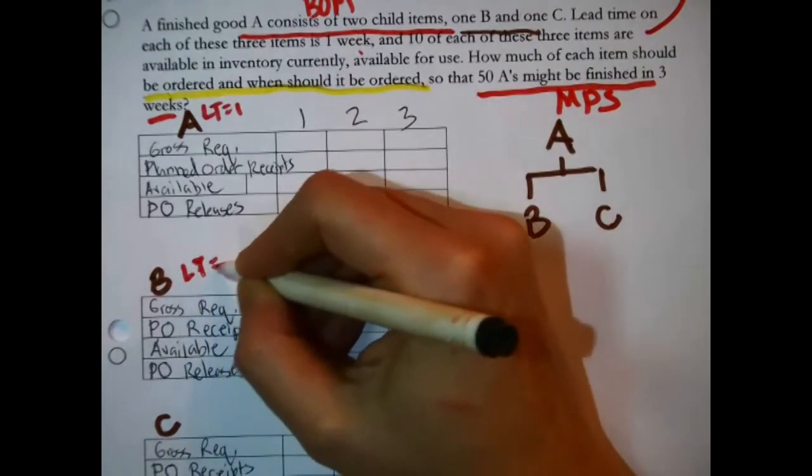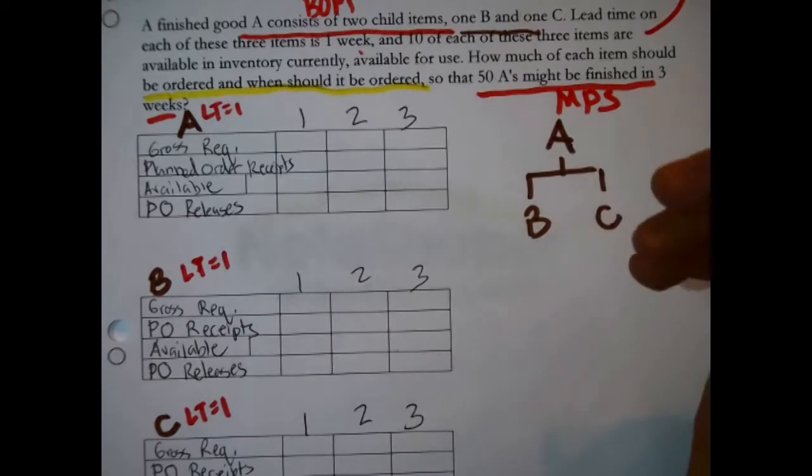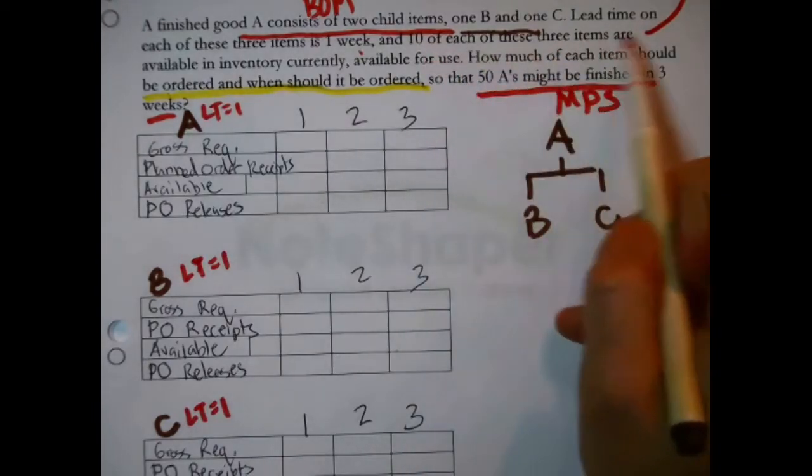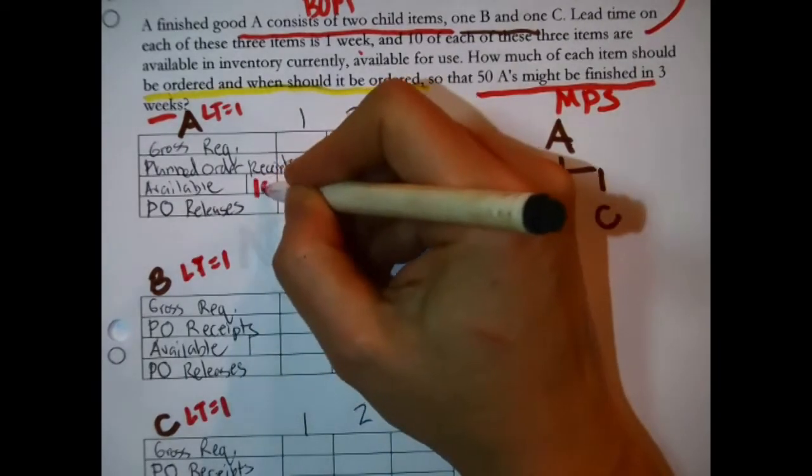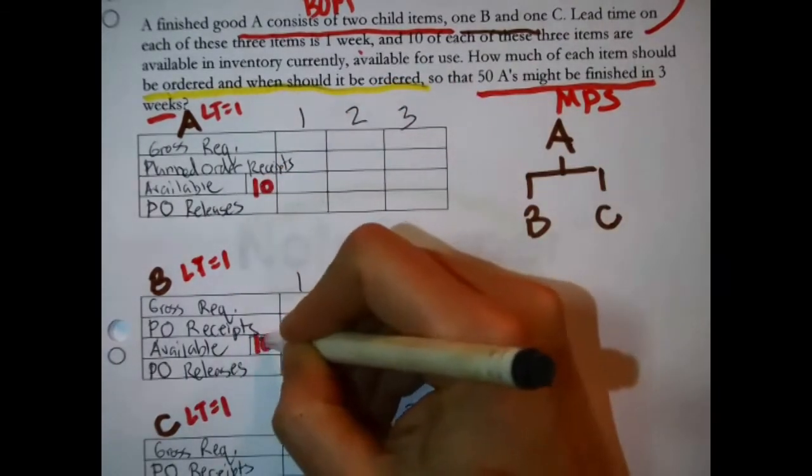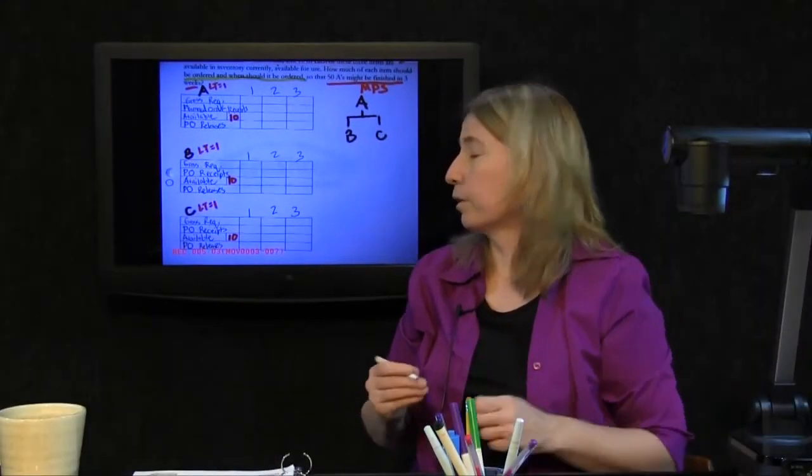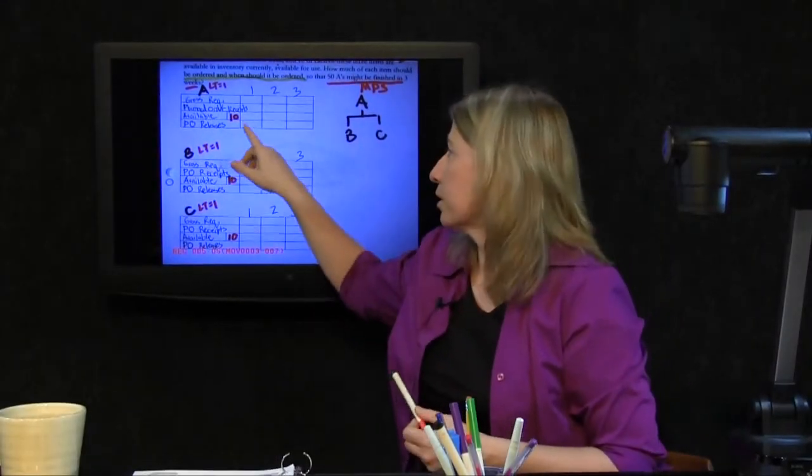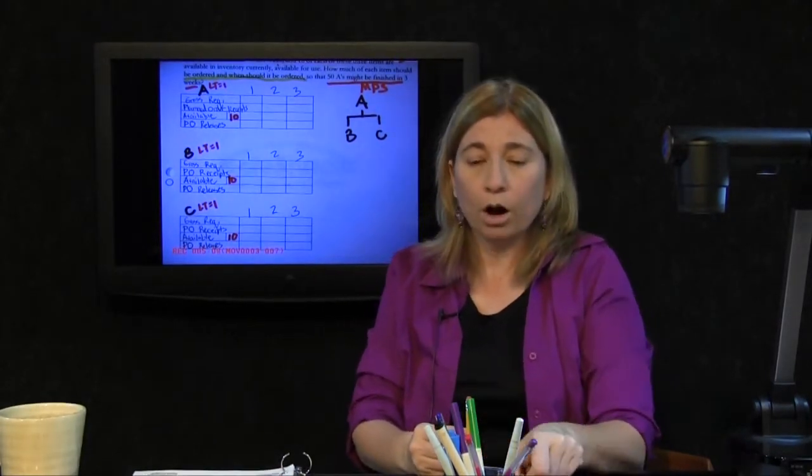I'm not determining anything here. I'm just organizing the information around the tables. And there are ten of each of these items available in inventory currently. That belongs there. That's with the strange extra little boxes to the left of the planning periods in each one of the records. That's where you store how much you're starting with, how much you have right now.